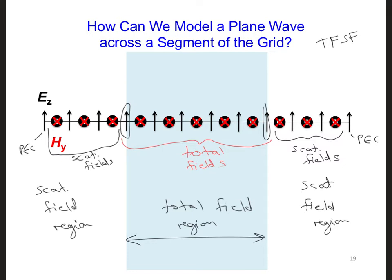Right now we have only one EZ array going across the grid and one HY array going across the grid. Can we still use a single EZ and HY array?